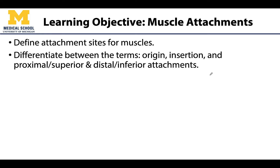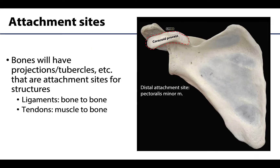There are quite a few terms associated with muscle attachments and we want to differentiate these in order to be successful throughout the year and understand what we mean by proximal attachment or distal attachment. Throughout the year we will be asking you in lab and through dissection supplementary videos to identify bony landmarks, and some of these bumps and lumps are associated with certain structures attaching to the bone.